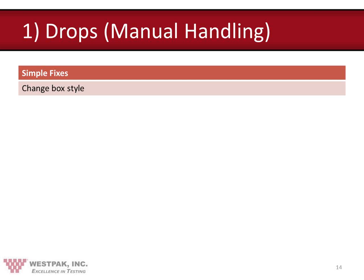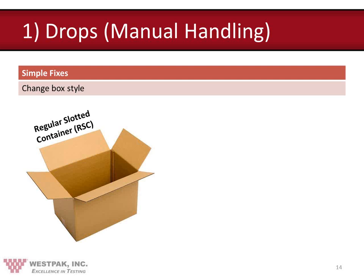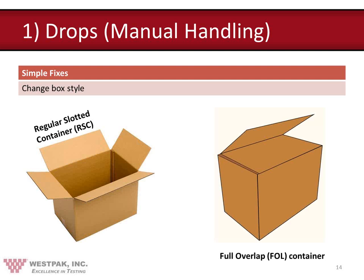The first simple fix for drop testing failures is to change the box design. Changing from a regular slotted container (RSC) to a Full Overlap container will reduce denting damage by reinforcing the corners. The Full Overlap container increases container cost about 20% and may require a different closure system — so there is a substantial cost associated with this change. You have to evaluate various fixes for both cost and effectiveness.